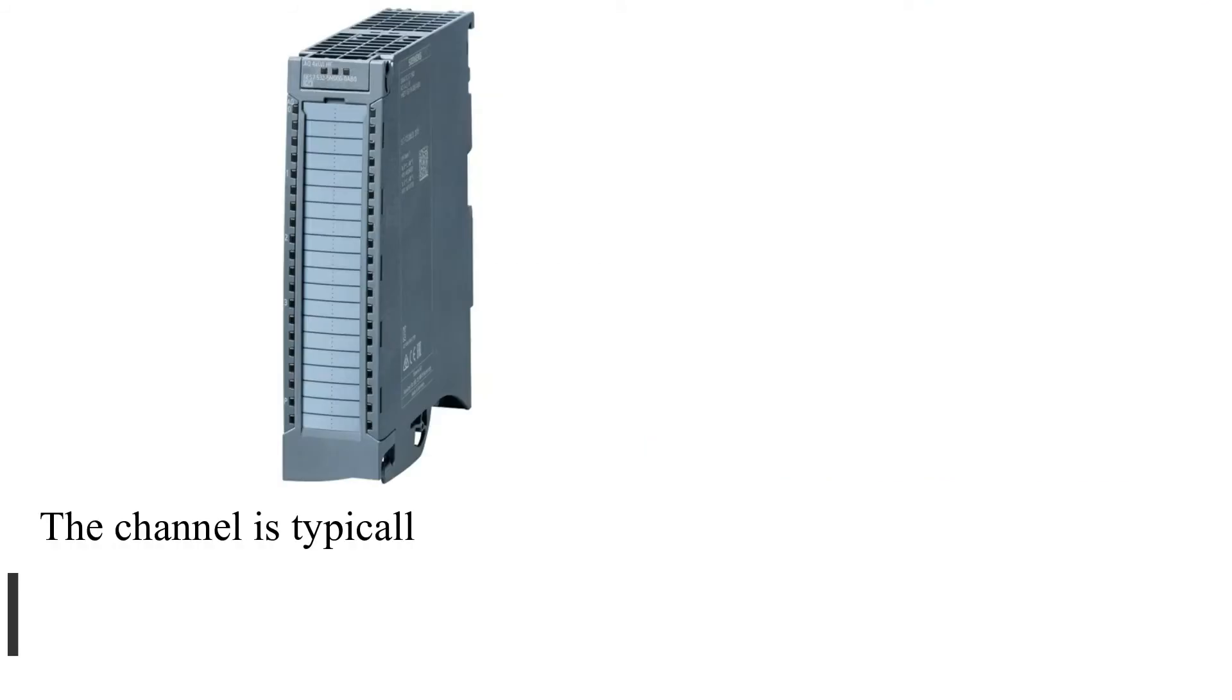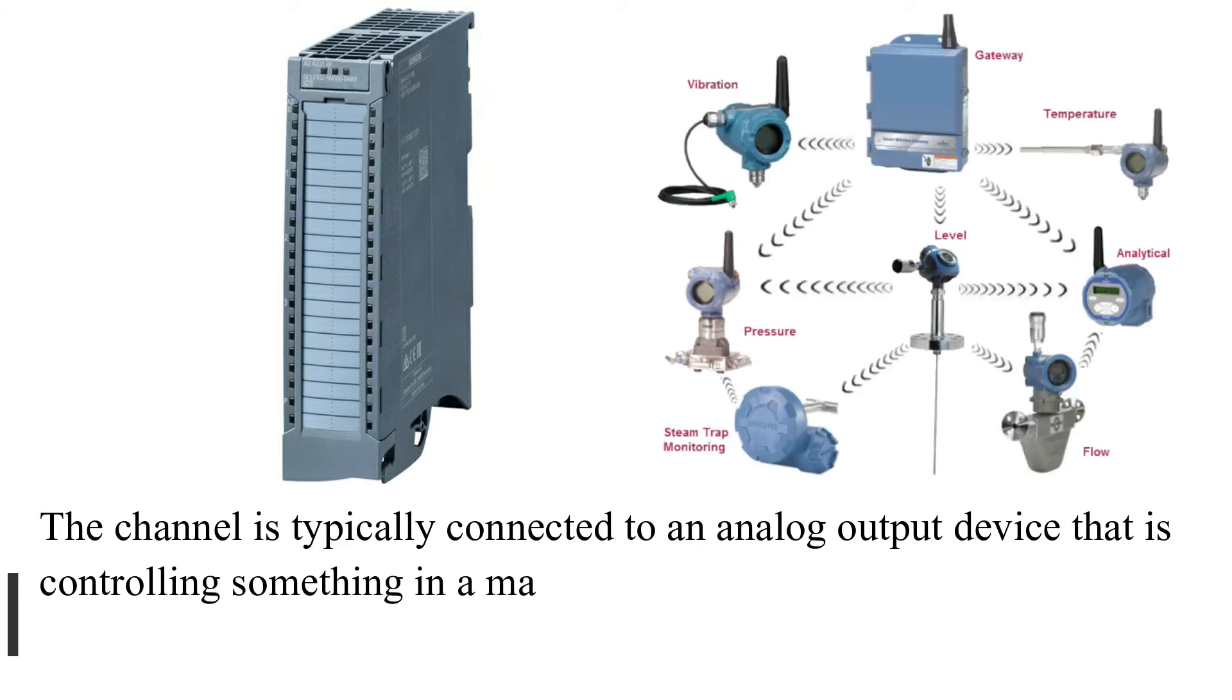The channel is typically connected to an analog output device that is controlling something in a machine or process, such as motor speed, valve position, or temperature.